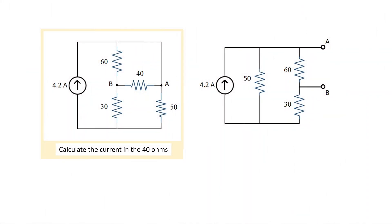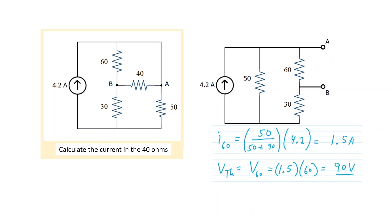Another resistor example, but instead of a constant voltage source we have a 4.2 amp constant current source. Again, I've shown a redrawing of the network missing the output, and you can verify the other connections are equivalent. For the Thevenin volts, the 4.2 amps divides among the 50 ohms and what's effectively 90 ohms — the 60 and 30 in series. Using the current divider, the current in the 90 ohms is also the current through the 60 ohms: 50 over the sum of 50 and 90, times 4.2 amps. The Thevenin volts is the voltage drop across the 60 ohms from Ohm's Law — 90 volts.